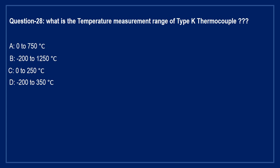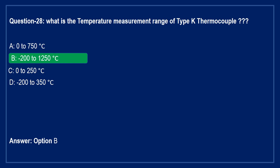What is the temperature measurement range of K-type thermocouple? Option A: 0 to 750°C. Option B: minus 200 to 1250°C. Option C: 0 to 250°C. Option D: minus 200 to 350°C. The right answer is Option B — minus 200 to 1250 degree centigrade.